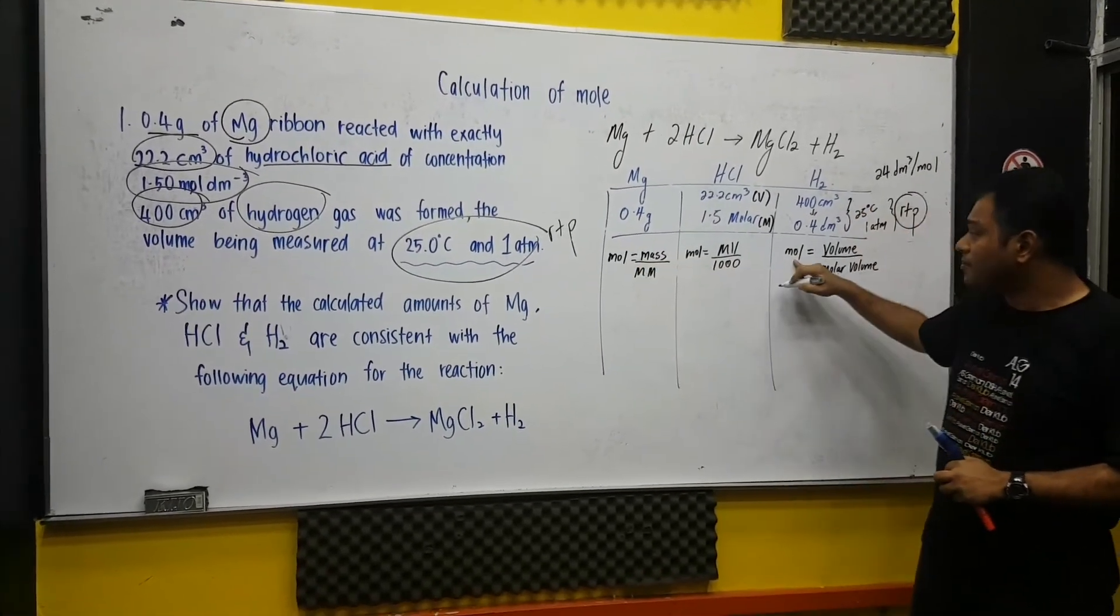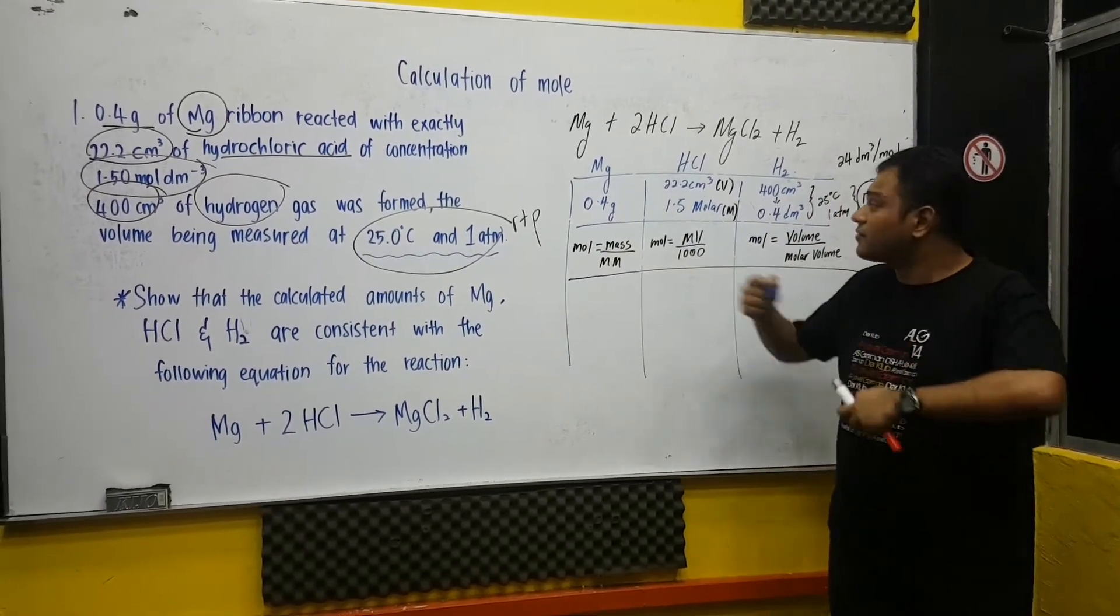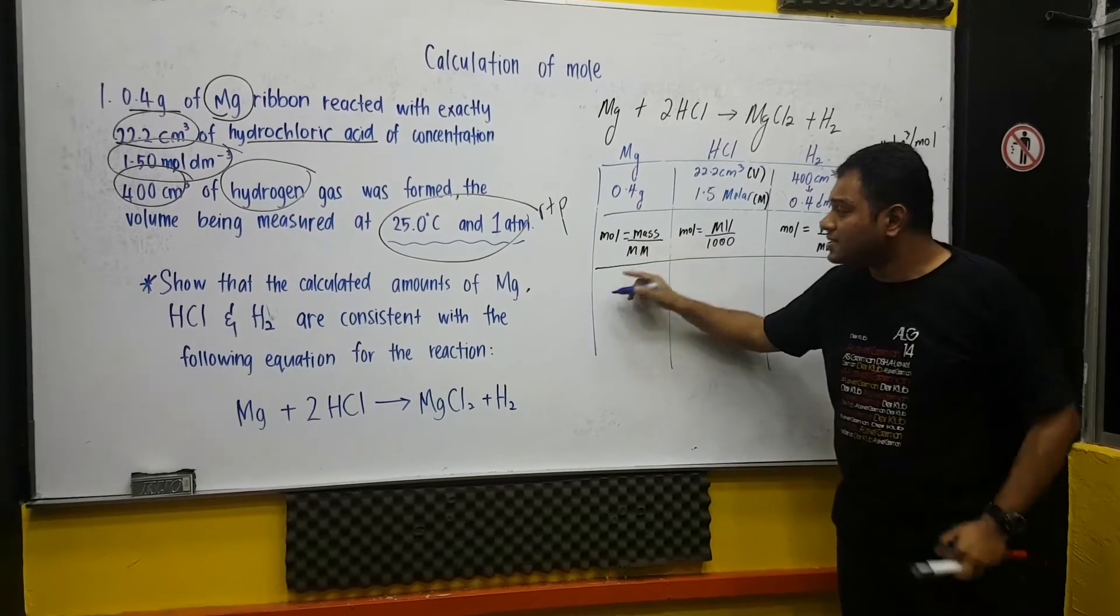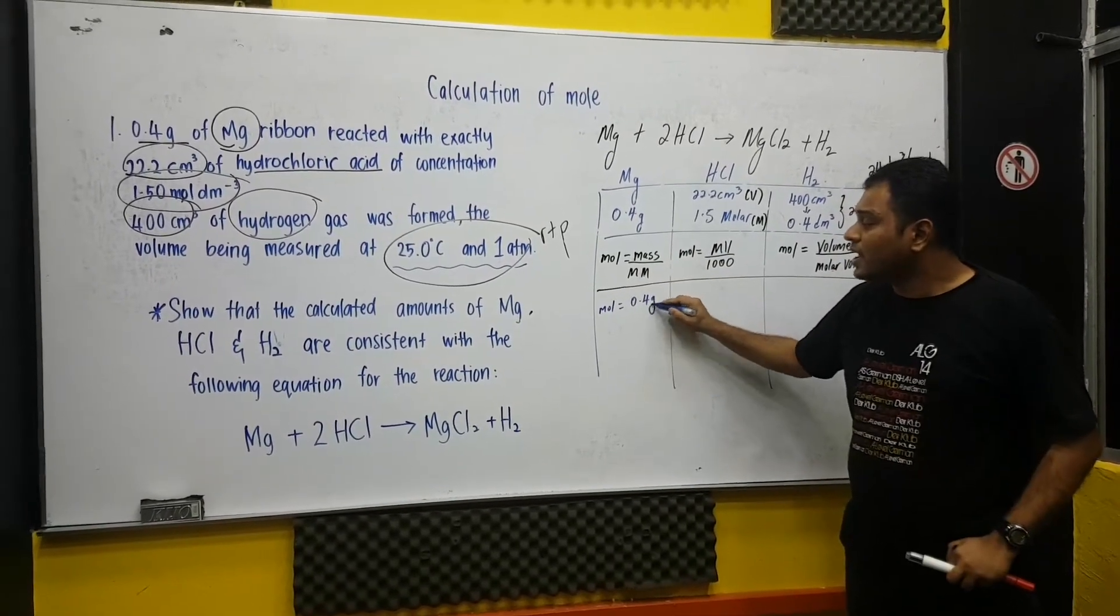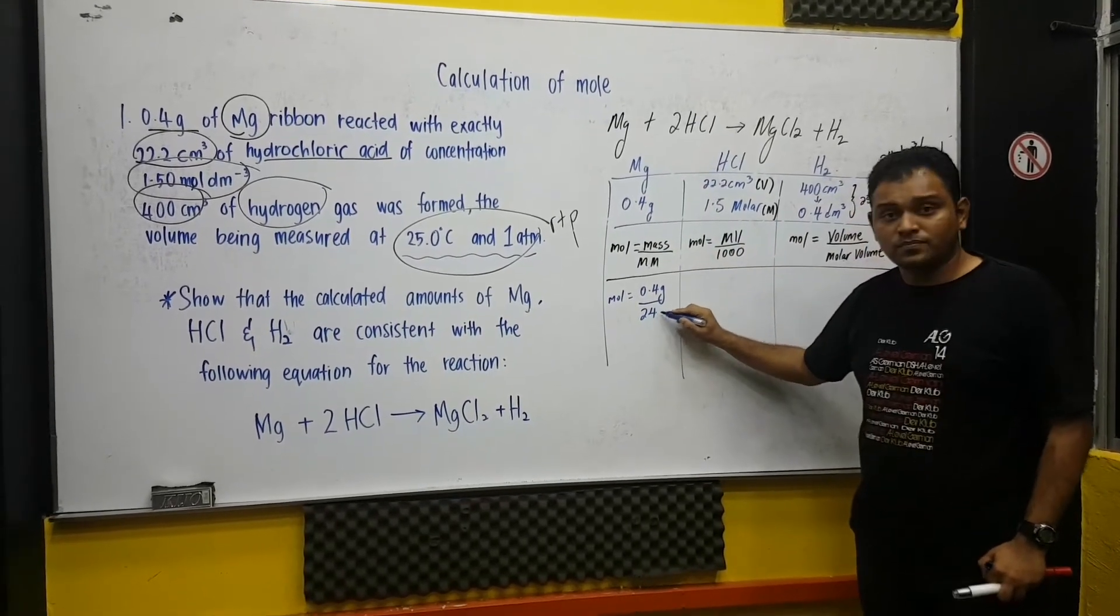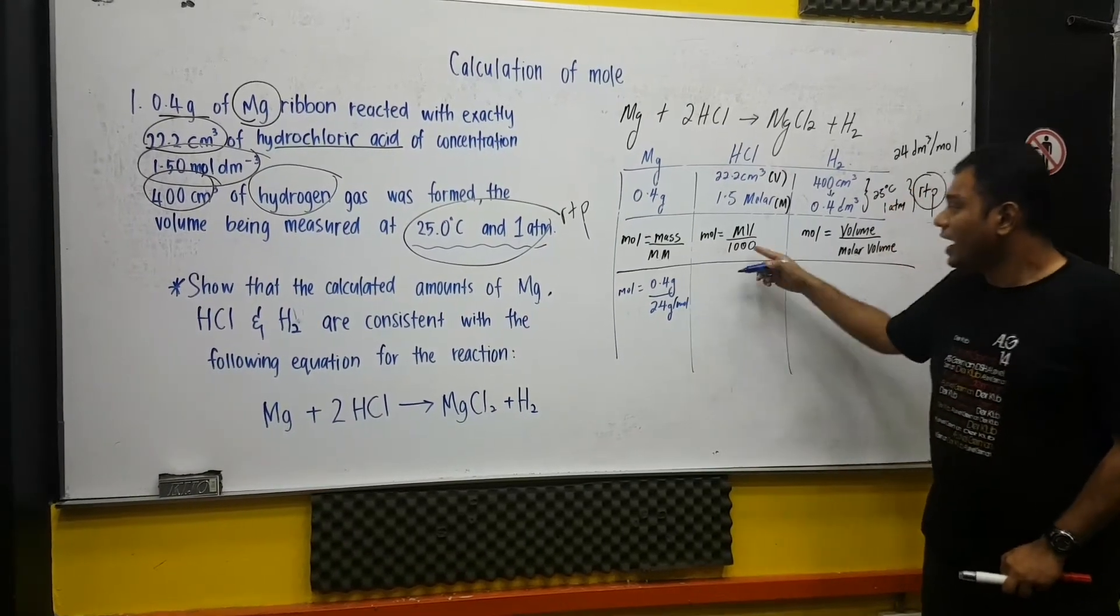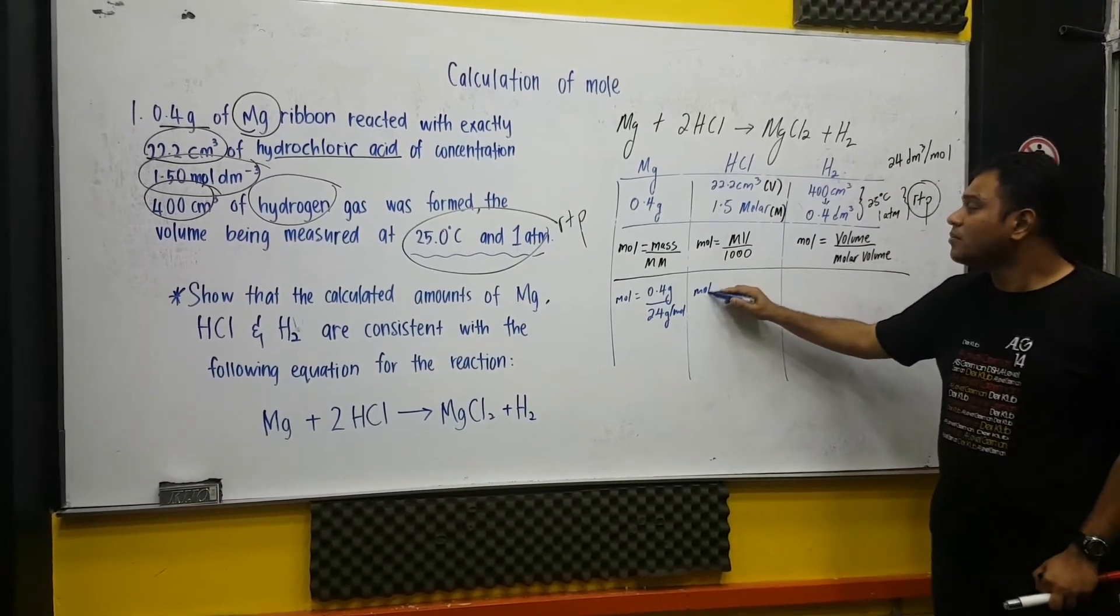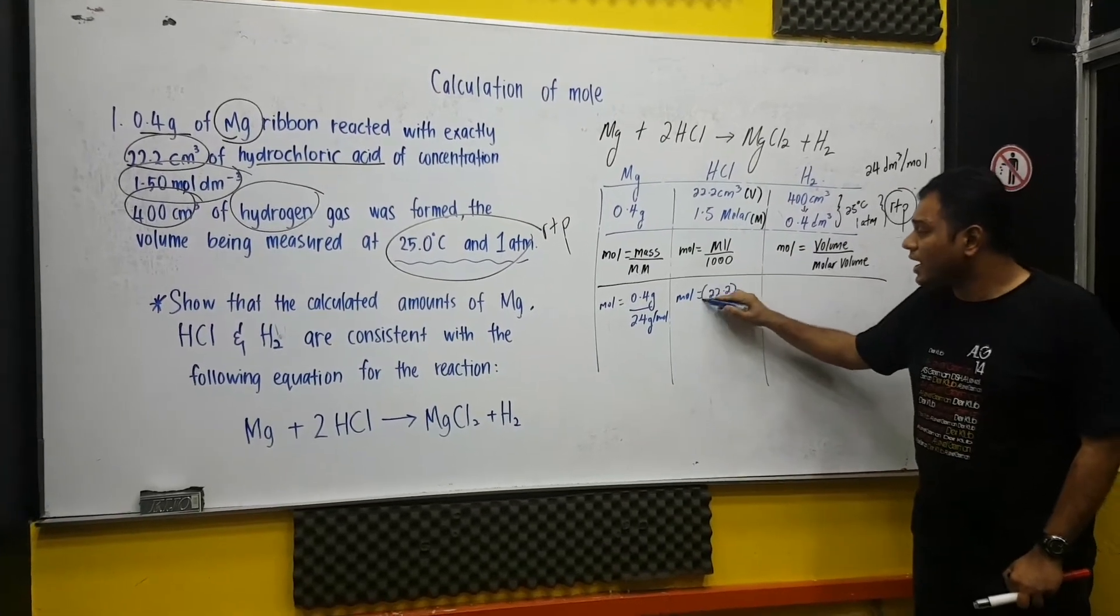Now we are going to do the calculations, of course. This is the mole, mole, and mole. How you are going to calculate each of it. The first one, the mass. The mass is given over there, is 0.4 gram. And the molar mass of this thing is 24 gram per mole.